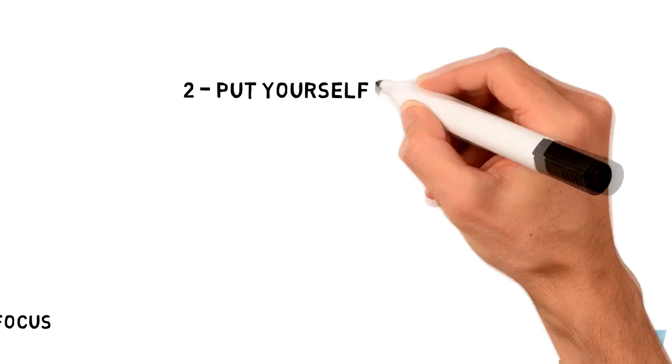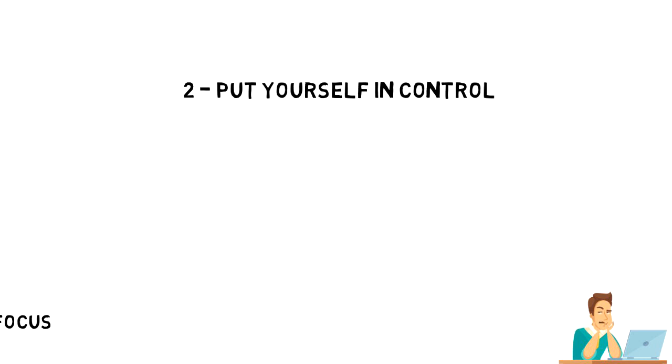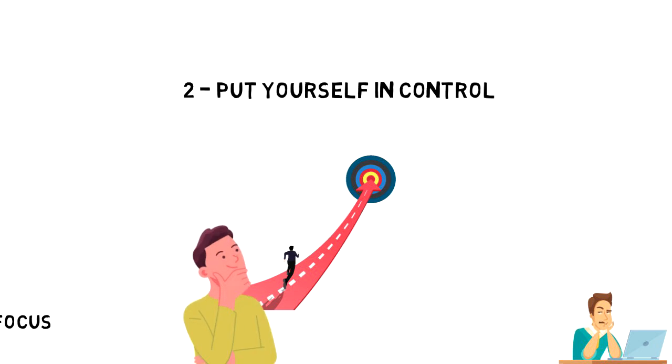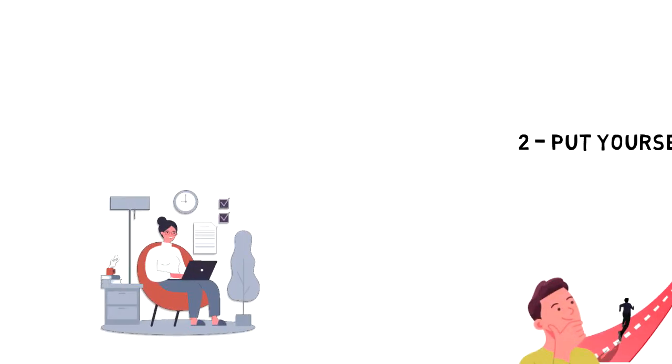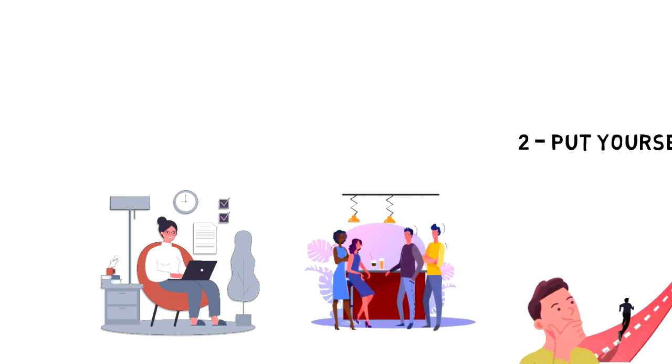Number two: put yourself in control. To put yourself in control, all you have to do is follow this simple rule: focus on the things that you can control and accept things that you can't. In your life there will always be things that you can control, things that you can influence, and things that you can't control.